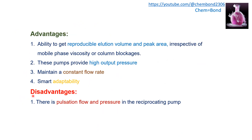Advantages and disadvantages of the reciprocating pump: similar to the syringe type pump, it produces reproducible elution volume and peak area irrespective of mobile phase viscosity and column blockages. It offers high output pressure, constant flow rate, and smart adaptability. The disadvantage is pulsating flow and pressure, but this can be avoided using a pulse damper.